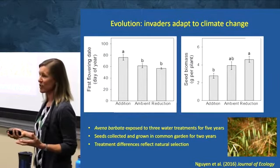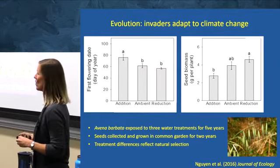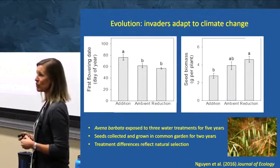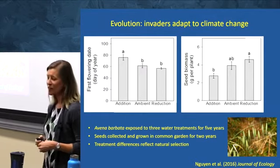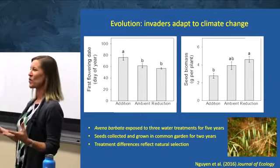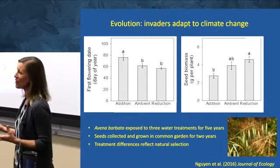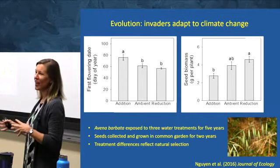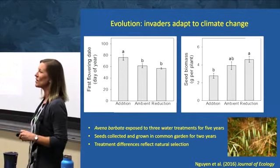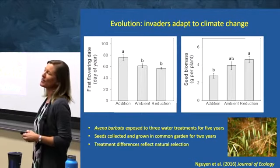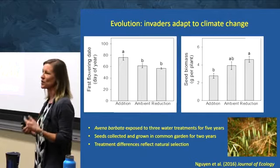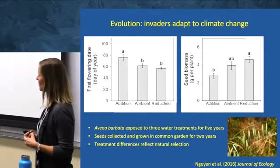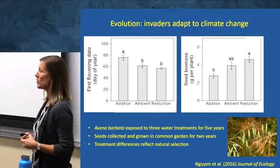We found that strategy was actually very effective — individuals from the ambient and reduced-water treatments had higher seed biomass than those from the water addition treatment. This was really frightening: after just five years, this one grass species was able to adapt to reduced water. A lot of us had been excited thinking that in Southern California, which is projected to get about 20 percent drier over the next 50 to 100 years, the invasive species would suffer — but these data suggest the invasive species might be just fine, at least the annuals able to adapt on short time scales.